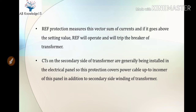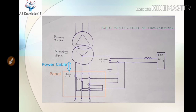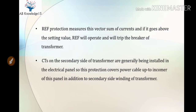The CTs are on the secondary side of the transformer and are generally installed in the electrical panel. This protection covers the power cable up to the incomer of this panel, in addition to the secondary side winding of the transformer. As you can see in this drawing, from the secondary side up to the panel the power cable is connected, and three CTs are installed at the panel side. So this protection additionally protects the power cable from the secondary side up to the installation of CTs at the electrical panel.